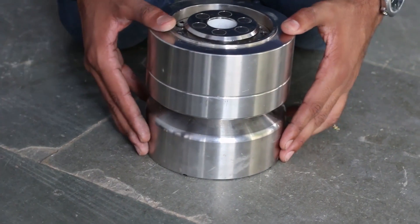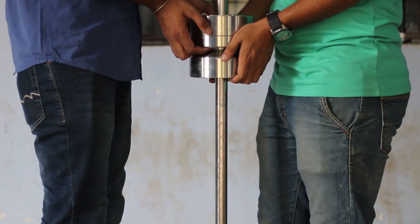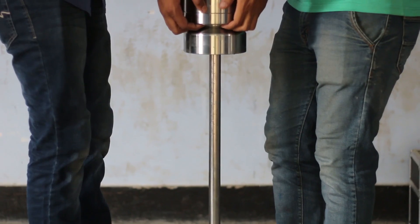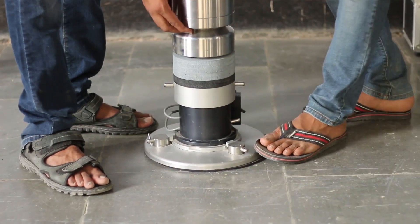For our experiment, we are going to use 15 kg weight. The 15 kg weight is placed slowly and carefully on the top of the LWD apparatus.